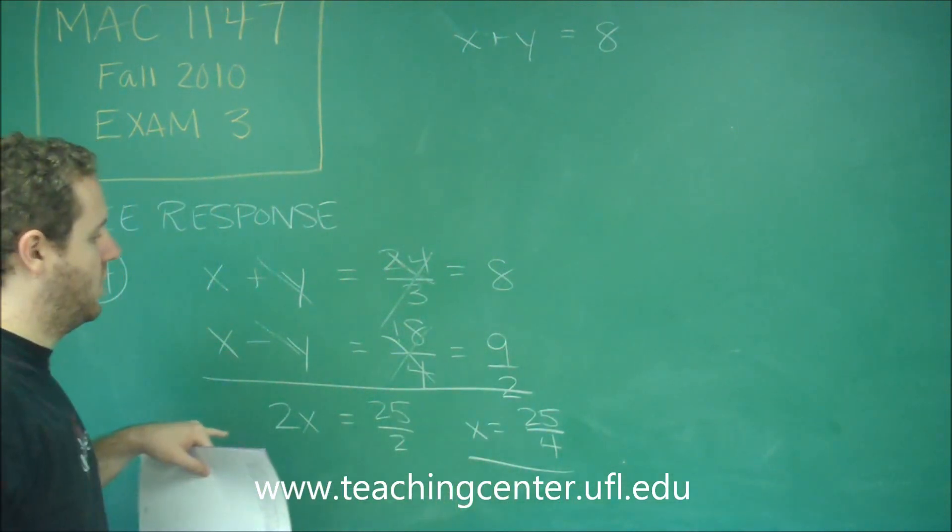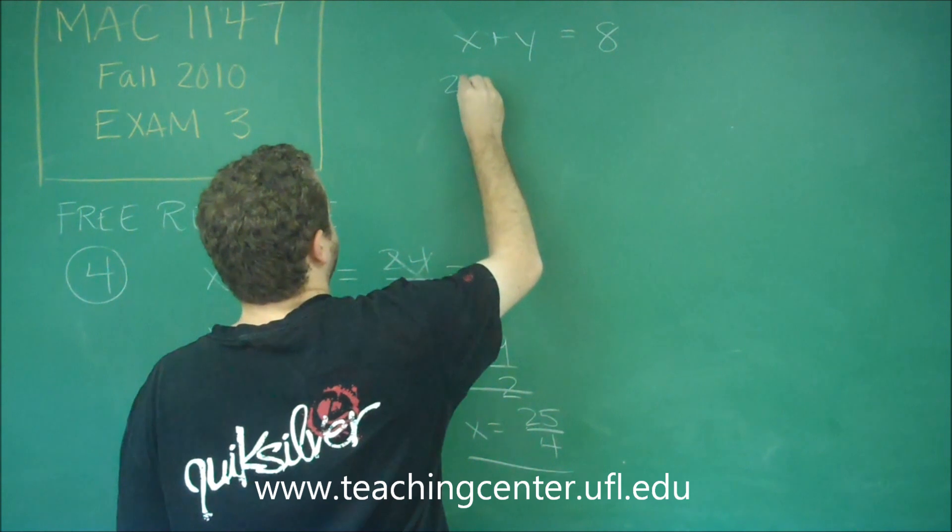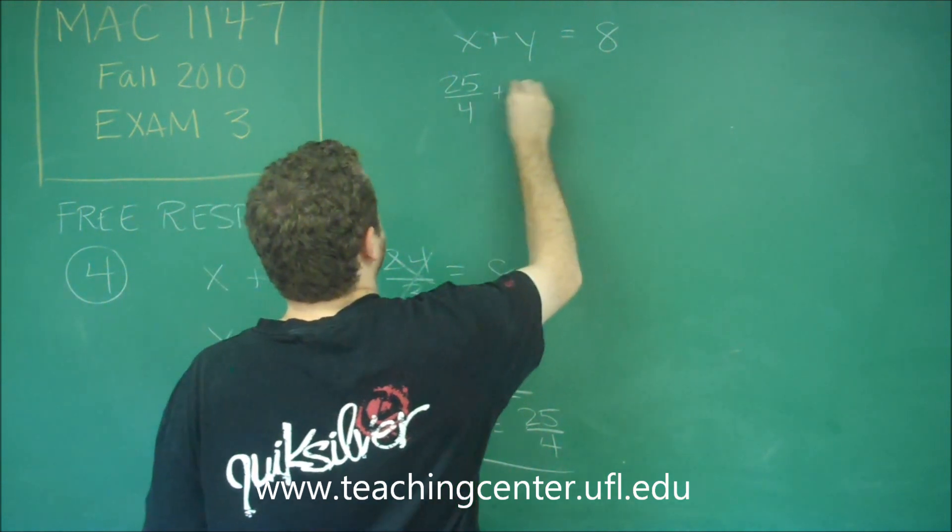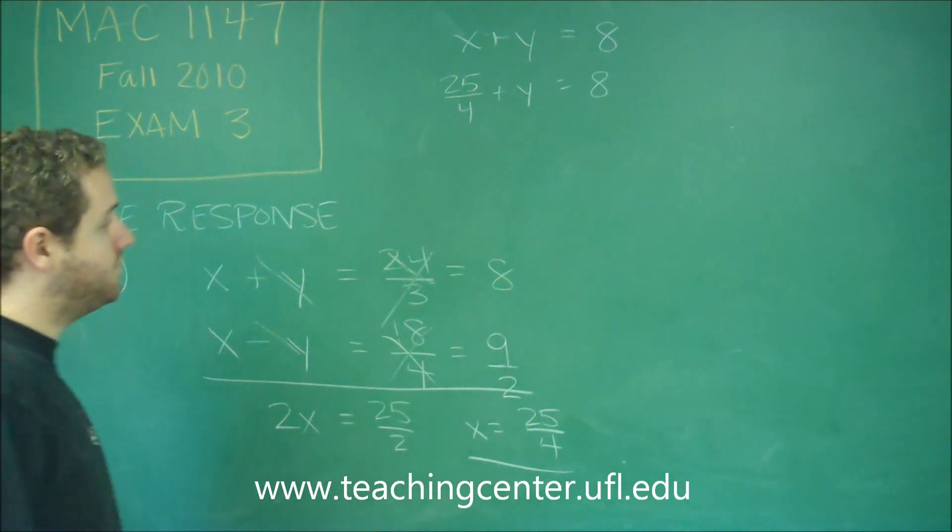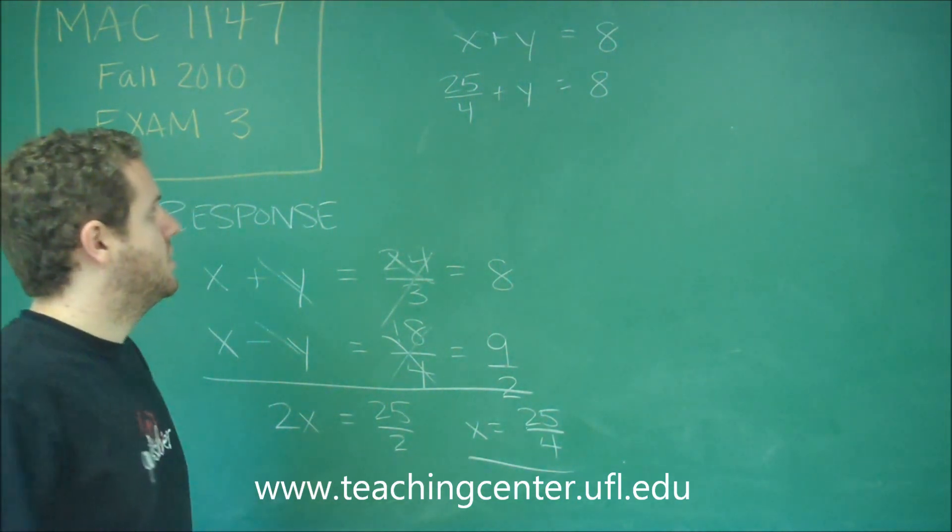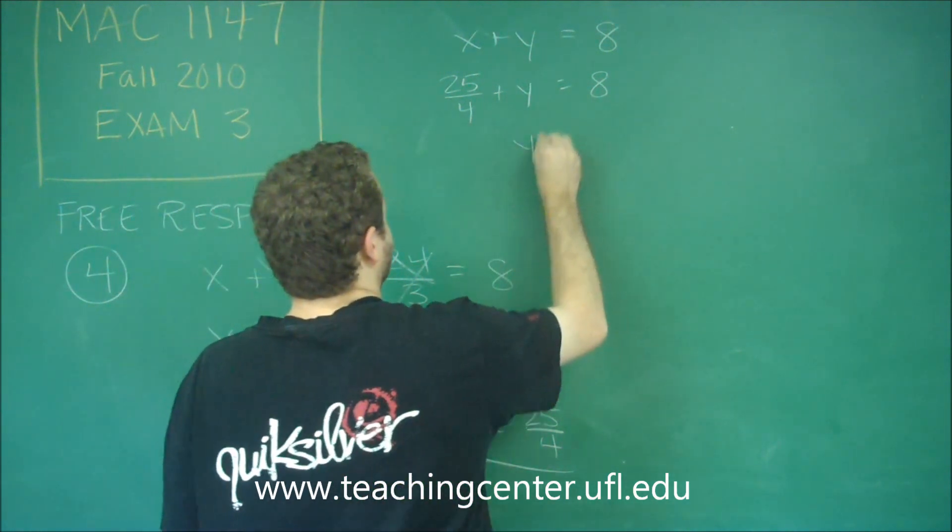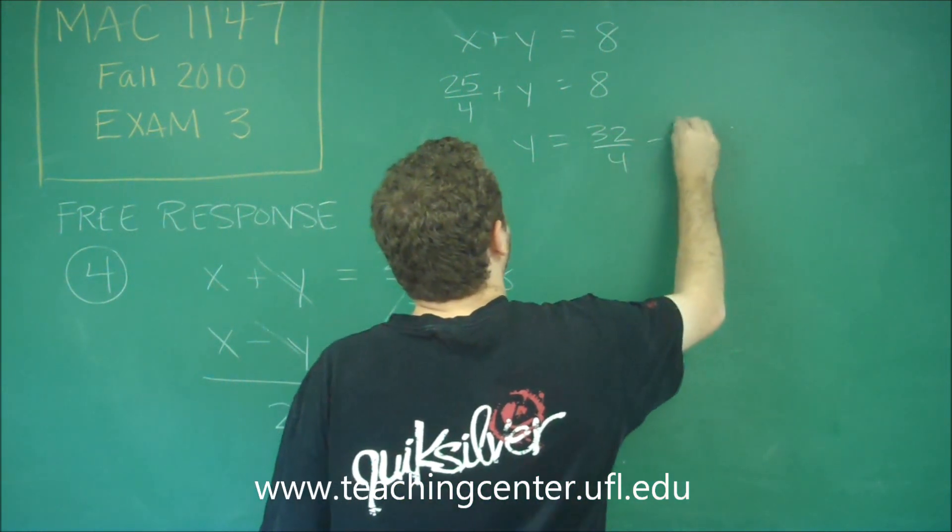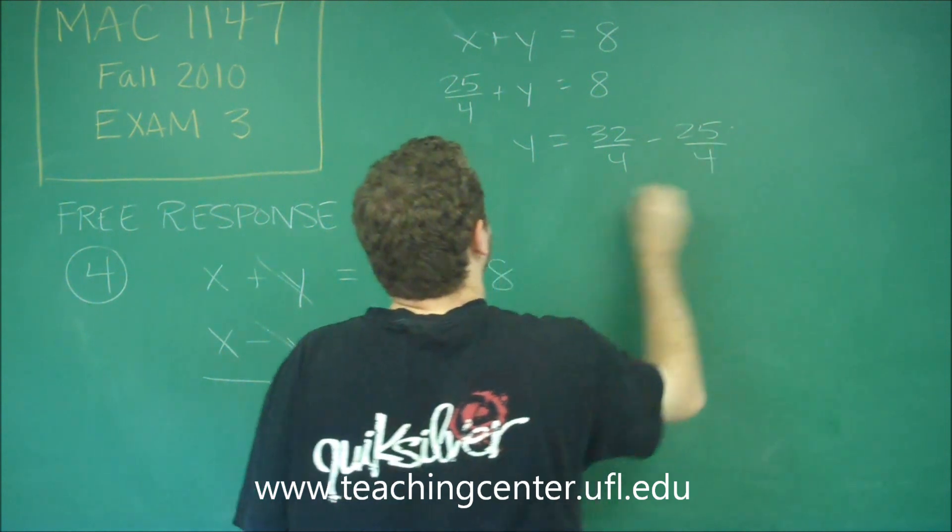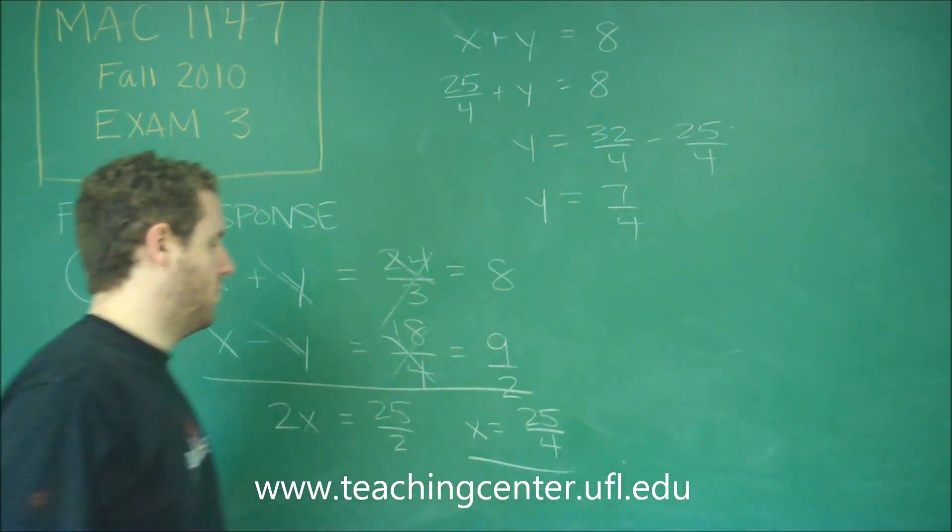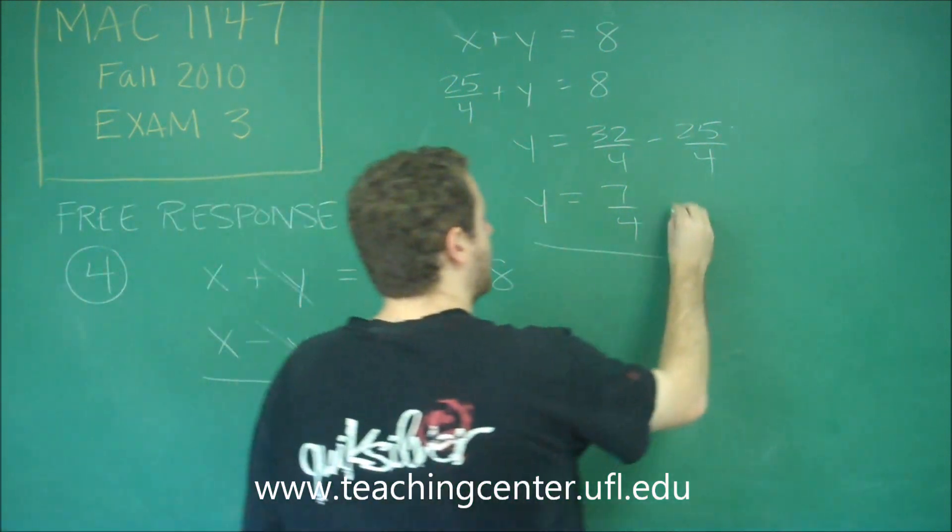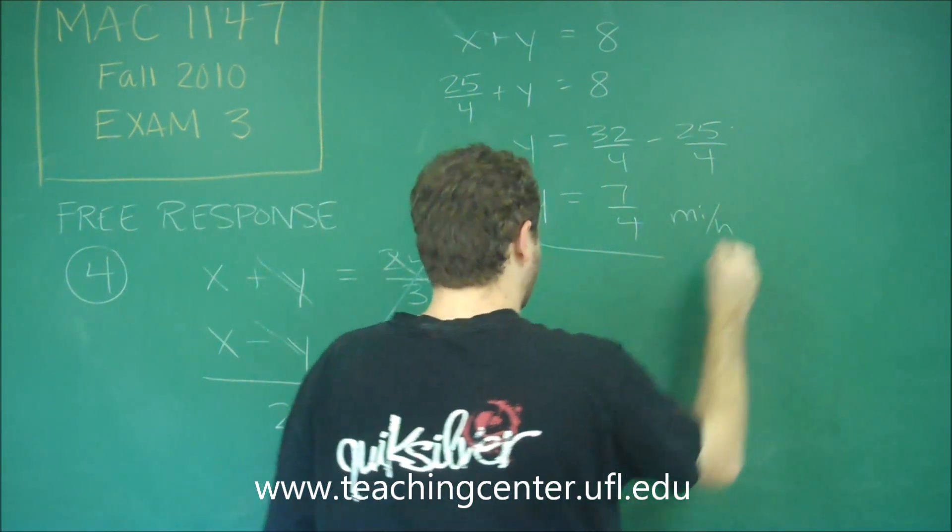So we just need to solve for y. x is 25 over 4. 25 over 4 plus y equals 8. We can just subtract then. 8 is 32 over 4. So subtracting 25 over 4 would give us 7 over 4.